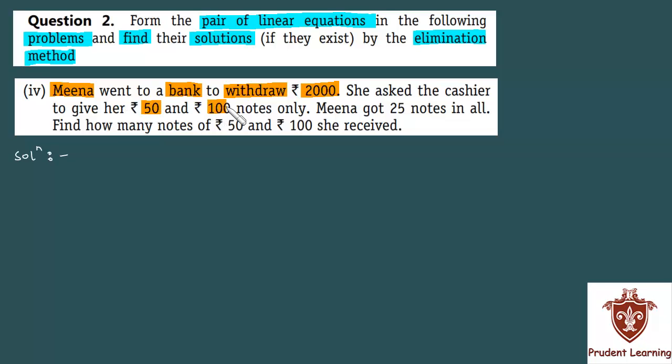50 and rupees 100 notes only. Meena got 25 notes in all. Find how many notes of rupees 50 and rupees 100 she received. Interesting question, easy way.